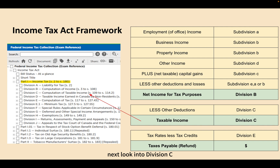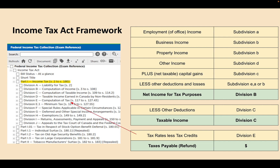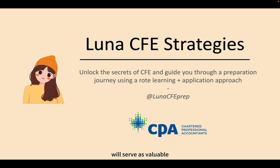Next, look into Division C for computation of taxable income. Common deductions in this section include stock option deductions, capital gain deductions, and capital loss credits. If you are unsure about any of these, this is where you should turn for clarification. Lastly, when it comes to available tax credits, such as the basic personal amount, pension, and tuition credit, you can refer to Division E for further guidance. Understanding the basic structure of the ITA will serve as a valuable resource during CFE exam prep, even though you may not need to delve deeply into it on day three.